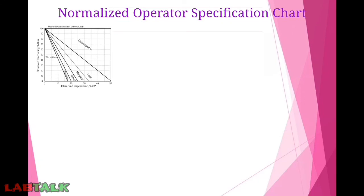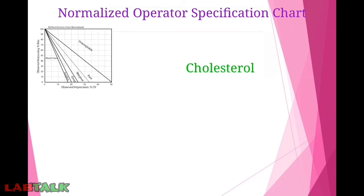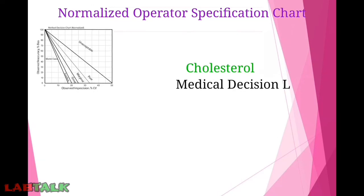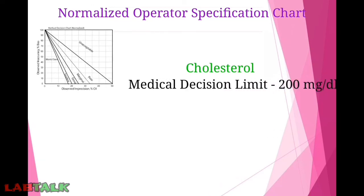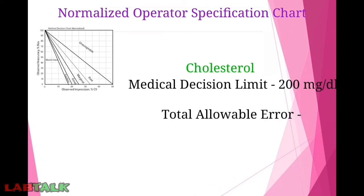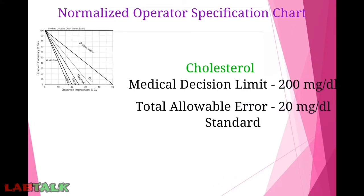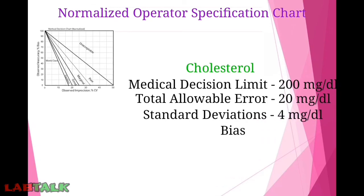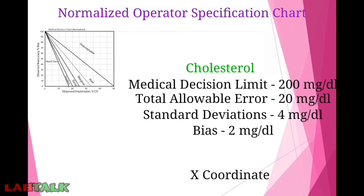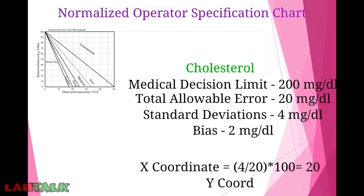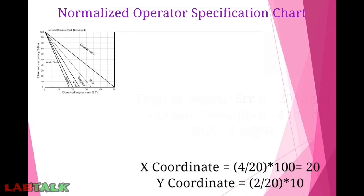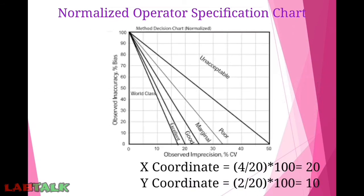Using the cholesterol example with a medical decision limit of 200 mg/dL, total allowable error of 20 mg/dL, standard deviation of 4 mg/dL, and bias of 2 mg/dL: the x-coordinate = (4 / 20) × 100 = 20, and the y-coordinate = (2 / 20) × 100 = 10. So the operating point coordinates are (20, 10).